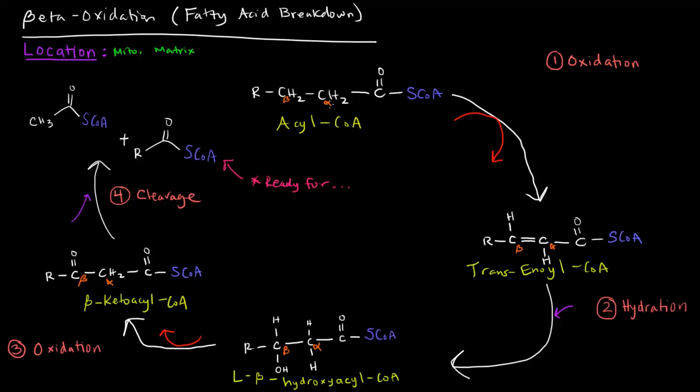We call it the alpha carbon. The one right next to it would be considered the beta carbon. So if this is beta-oxidation, we would expect to see that this beta carbon is oxidized, and that's actually what happens. This process, beta-oxidation, is only four steps, the first one being an oxidation step. And this is actually the first oxidation step, as there is more than just one.